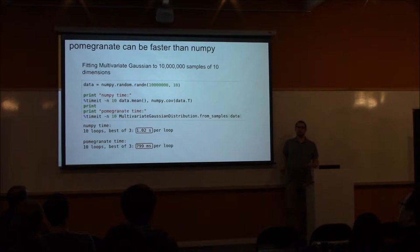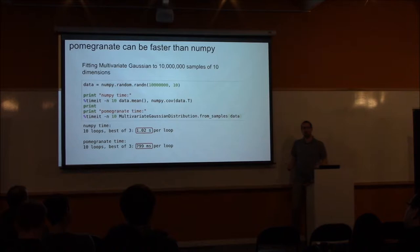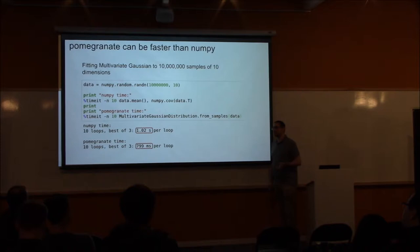Those familiar with NumPy will know that NumPy uses BLAS in the back end, which is basically computational magic that makes everything go fast. You may be wondering how pomegranate is able to go as fast as NumPy. The reason is because pomegranate is also using BLAS in the back end — Cython recently released Cython-level hooks for BLAS, and pomegranate makes use of those whenever possible to speed up its computations.